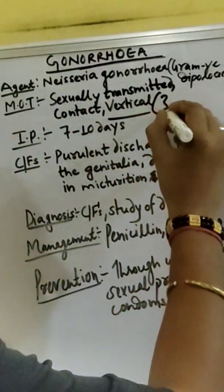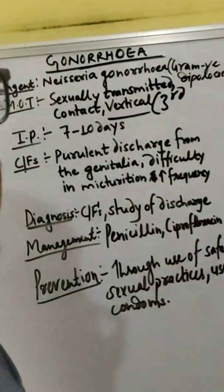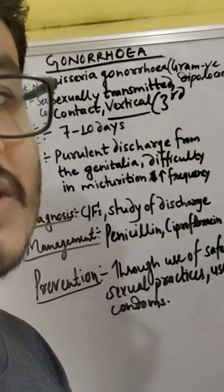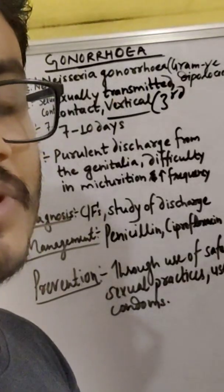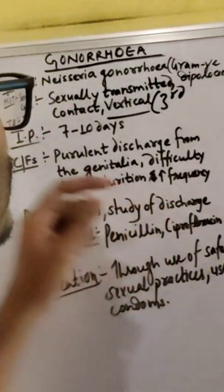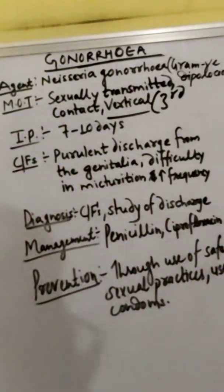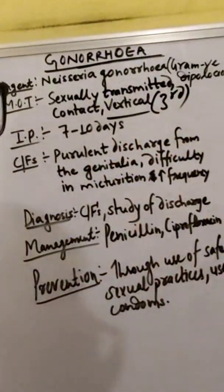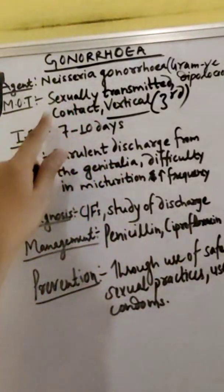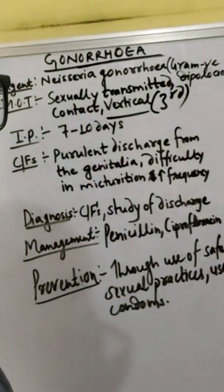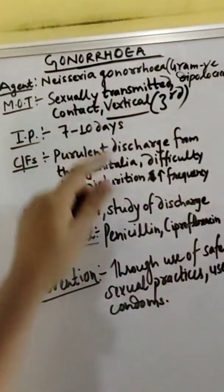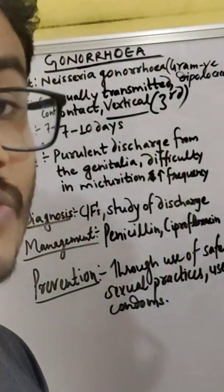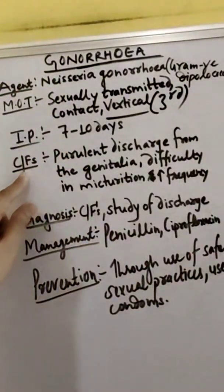Vertical transmission occurs in the third trimester, where a pregnant woman will transmit the disease to her child. The incubation period of gonorrhea is 7 to 10 days, and in the case of syphilis, 9 to 90 days. So what are the clinical features or symptoms?